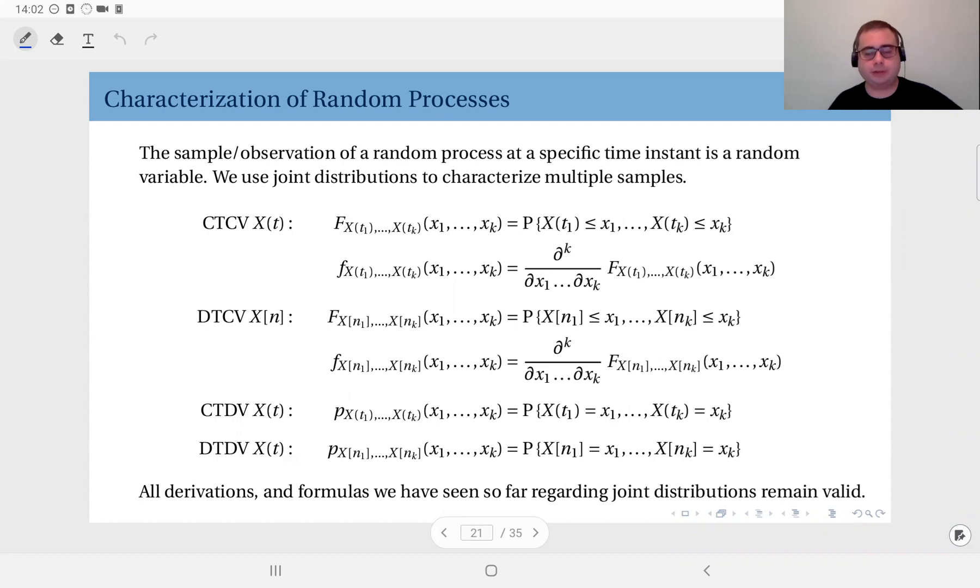And to characterize random processes, we are going to use the joint distributions for time samples. The sample, the observation of a random process at a specific time instant, remember, is a random variable. This is a very important concept. If you sample a random process at a specific time, what you get is a random variable. So if you sample it at multiple time instances, what you get is a random vector. If you have a number of random variables, so you can define the joint distribution of this observation.